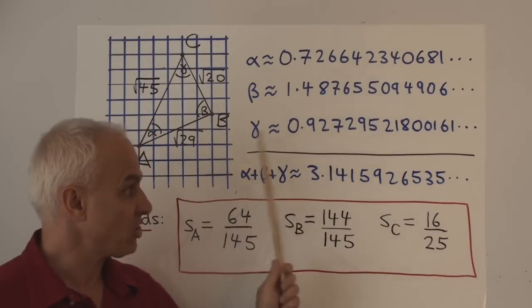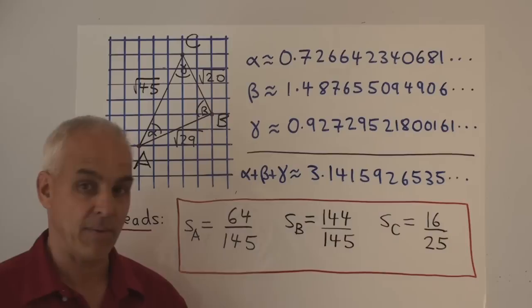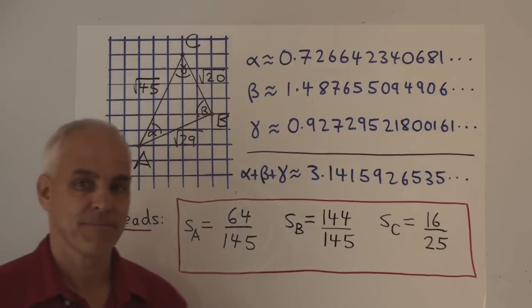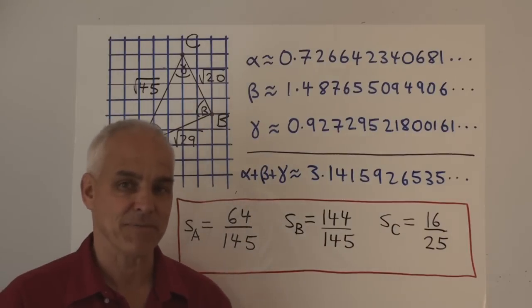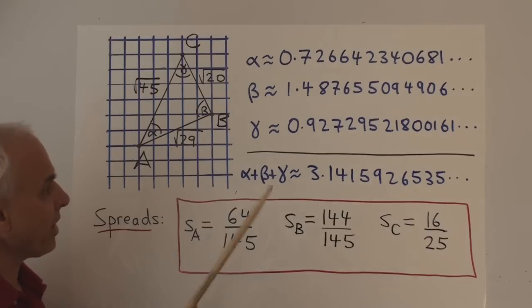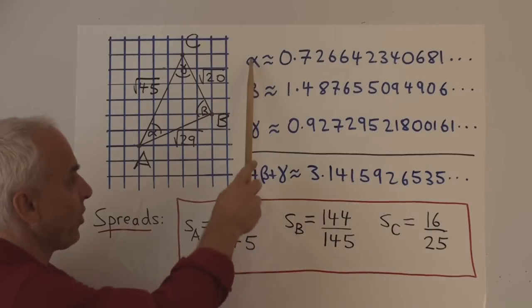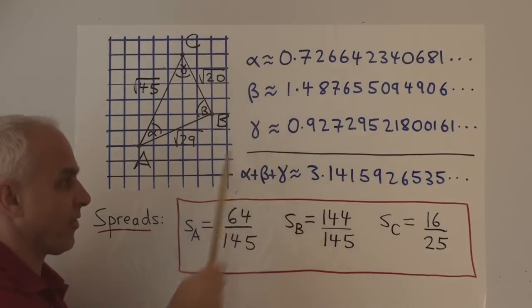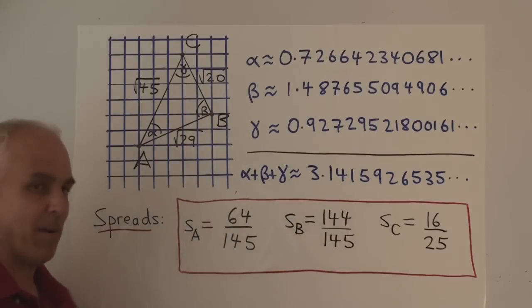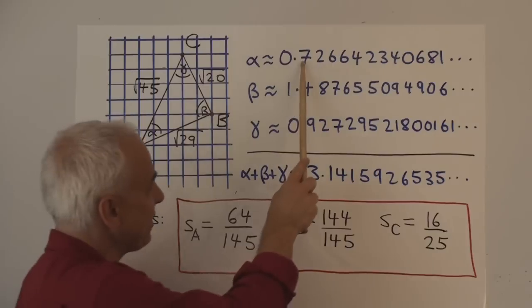I suspect that even a professional mathematician, working paper and pencil without a calculator, would take under a week of work to come up with these answers. If you're a professional mathematician, you can prove me wrong. In the standard framework, one of the advantages of working with angles is that the three angles of the triangle sum up to pi.